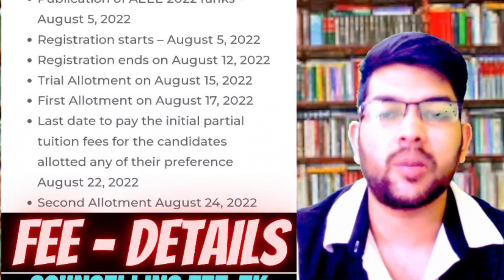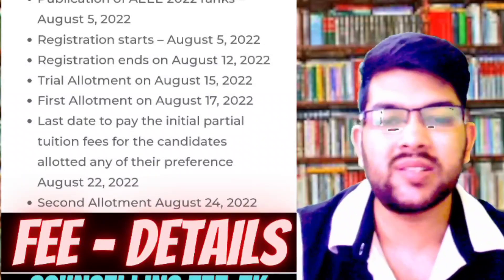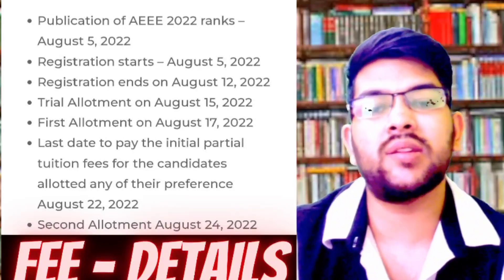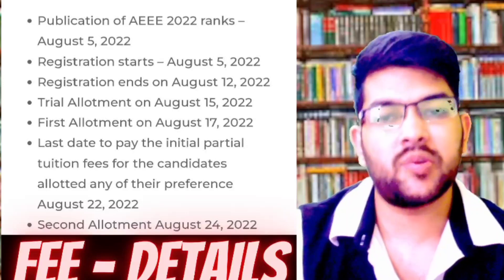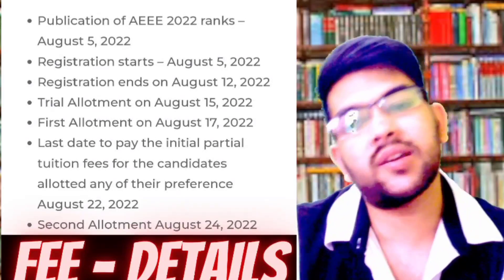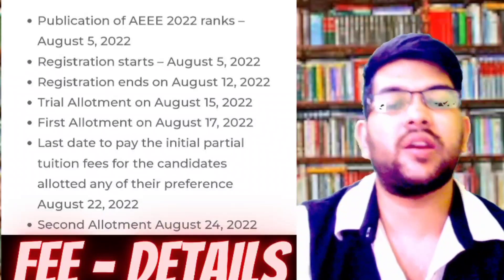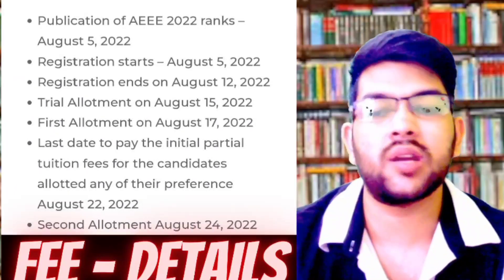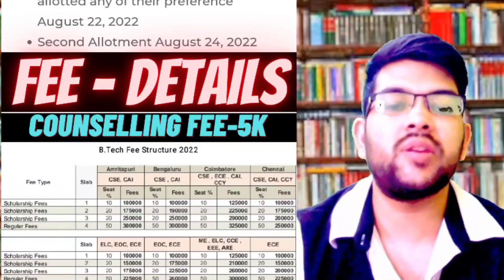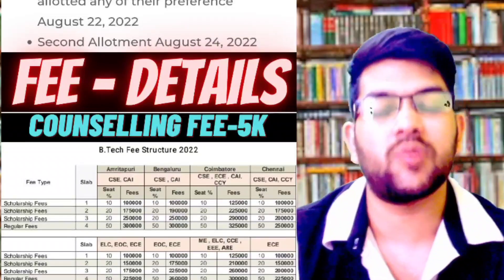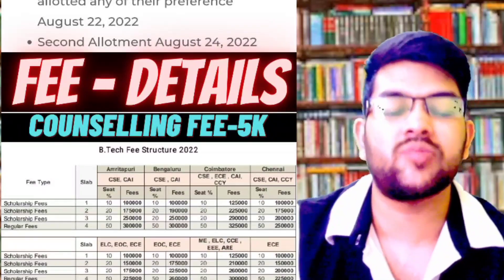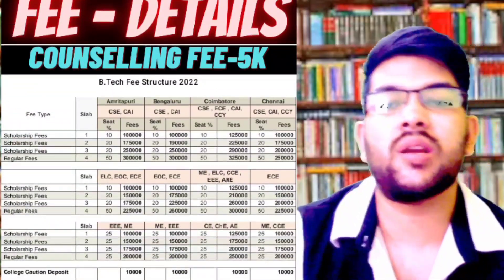There are different options: Float means you retain the seat but go for the next round — if you get a better option your seat changes and you cannot get the previous seat back. Freeze means you are ready to take admission in the given college. Slide means you want a different branch in the same campus. Second allotment will be on August 24th. Counseling fee is Rs. 5,000 — it will be adjusted against academic fee if you take admission. If you don't get a seat, Rs. 5,000 is refunded. If you get a seat but don't take admission, Rs. 5,000 is not refunded.